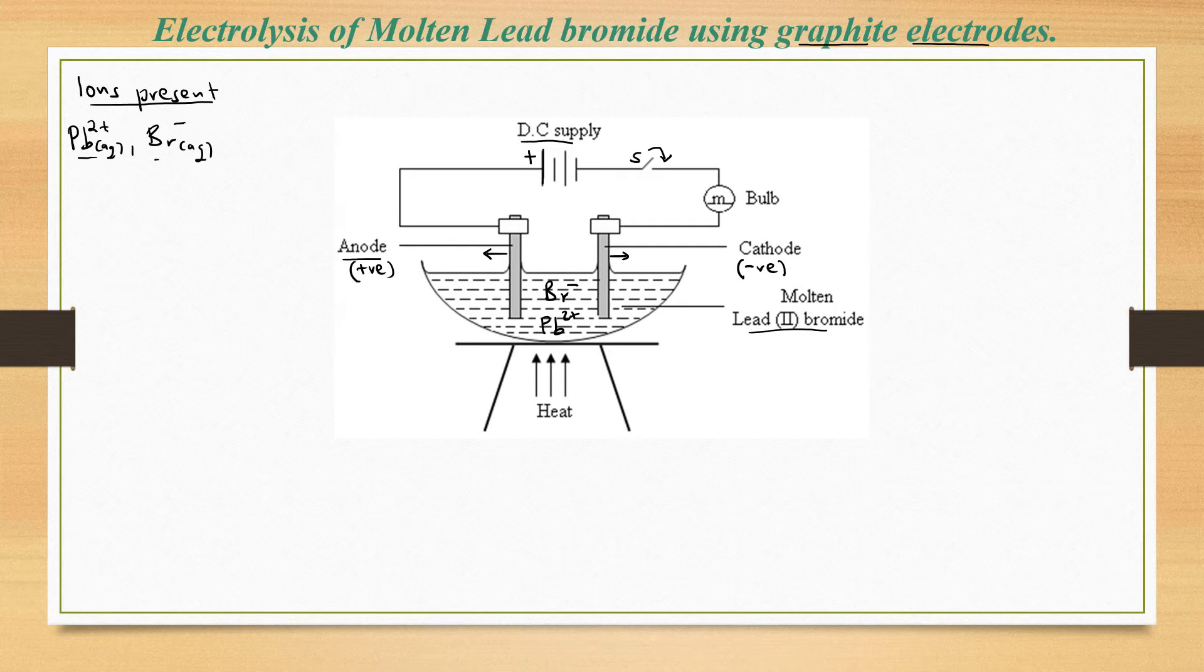When you look at the reaction at the anode, the positively charged electrode, we shall have the negatively charged ions migrating towards this positively charged electrode. This is electron deficient and basically positively charged. The bromide ion will lose its electron to form a bromine atom. However, bromine is basically a diatomic molecule, so the element will require two ions of bromine to lose two electrons so that we form bromine gas (Br₂). This will be the discharge of the bromide ions at the anode.